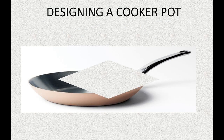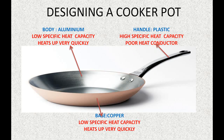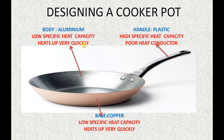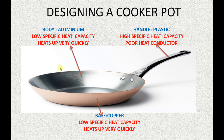Designing a cooker pot. This cooker pan is made up of different materials with different specific heat. The inner body is made up of aluminum, which has low specific heat capacity and heats up very quickly. The base is made up of copper, which has even lesser specific heat than aluminum — that's why the base heats up very quickly.